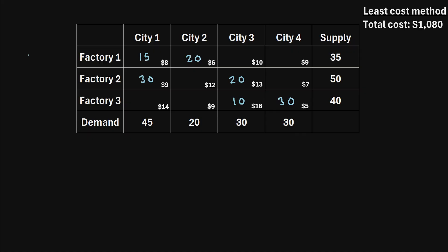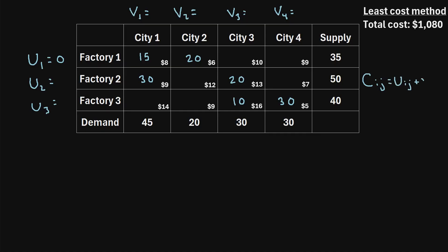The way that we do that using the MODI method is: the first step is we create a variable called u1 and set it equal to 0. This variable u1 is for row 1. Next we create u2 for row 2 and u3 for row 3. Then along the columns we create variables v1, v2, v3, and v4. To figure out the values for all of these u's and v's, we use the formula: Cij equals ui plus vj, where C is the unit shipping cost for row i and column j. We find the values for u and v for each of the allocated cells in the table.